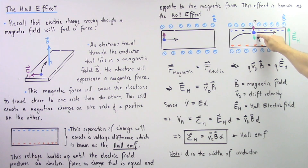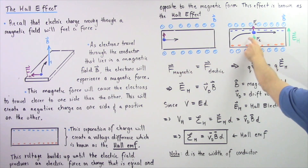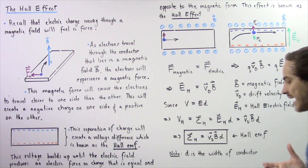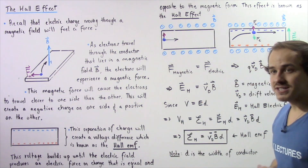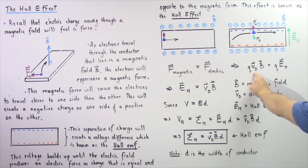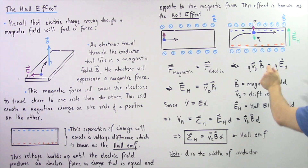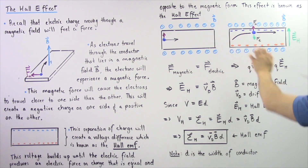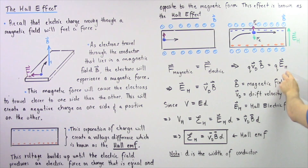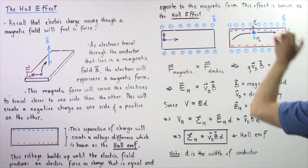Let's examine the situation when the two forces are equal. Our magnetic force acting on the electric charge equals the electric force acting on the electric charge. By definition, the magnetic force equals the quantity of charge Q multiplied by the velocity of our charge multiplied by the magnetic field B. That is equal to the electric force, given by the charge Q multiplied by the electric field E_H, where H stands for the Hall electric field produced by the Hall effect.